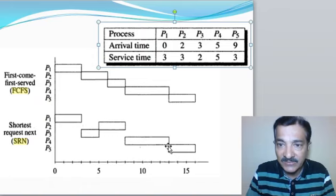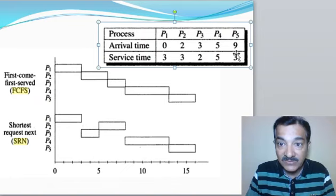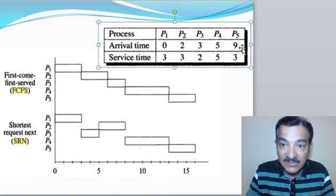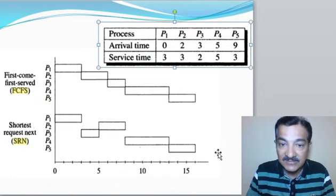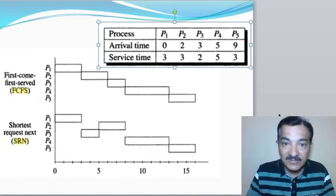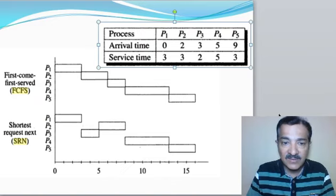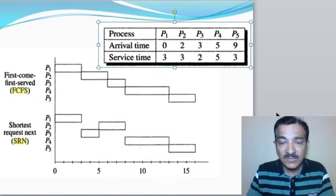Process 5 arrives during process 4's execution, but since it is non-preemptive, process 4 keeps executing until its completion. Then process 5 is taken up for execution and executes for the next 3 seconds. I hope you have understood clearly how first come first serve and shortest request next scheduling algorithms work.